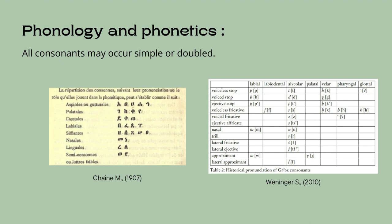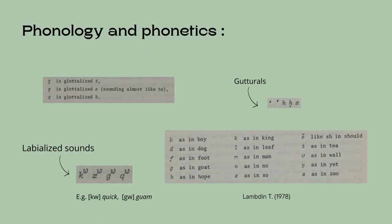According to linguist Thomas Lambdin, most consonants offer no problems in pronunciation for English speakers. I've provided English counterparts on this slide from Lambdin's introduction to classical Ethiopian. There are additional sounds referred to as gutturals; the first two are pronounced as glottal stops. The consonants t, d, s, and k have the common feature of glottalization. Lambdin describes it as the flow of air being cut off completely at the glottis and the sound being made by a forcible ejection of the air already in the oral cavity. These sounds have a very sharp, click-like character.